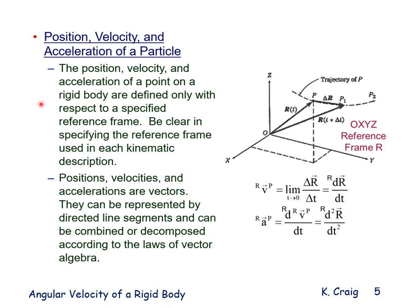The position, velocity, and acceleration of a point on a rigid body are defined only with respect to a specified reference frame. Be clear in specifying the reference frame used in each kinematic description. Positions, velocities, and accelerations are vectors — they can be represented by directed line segments and can be combined or decomposed according to the laws of vector algebra.